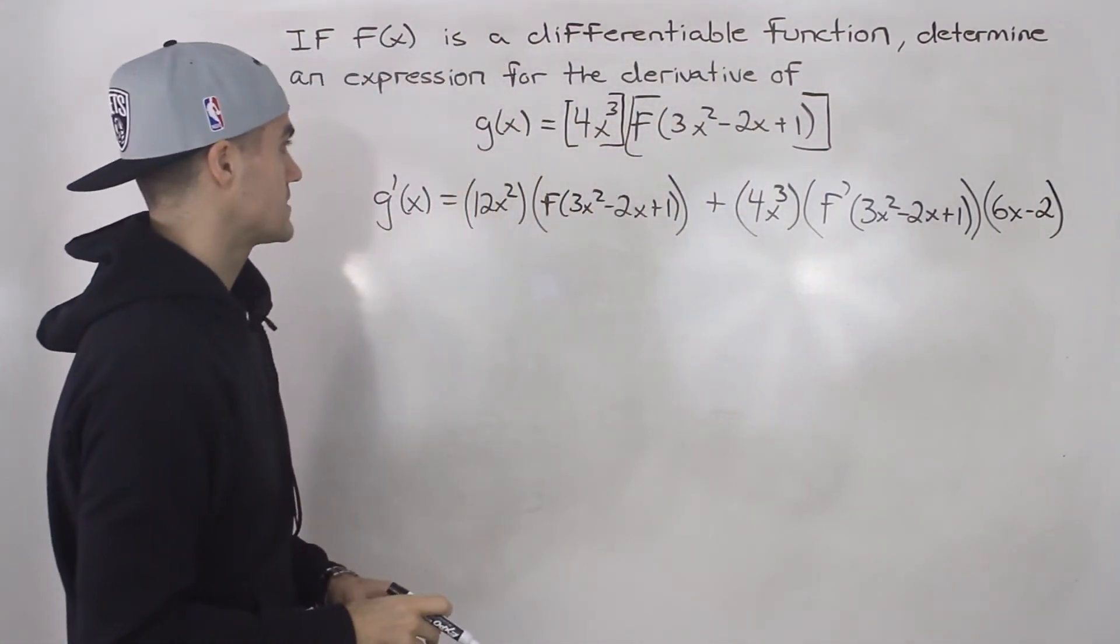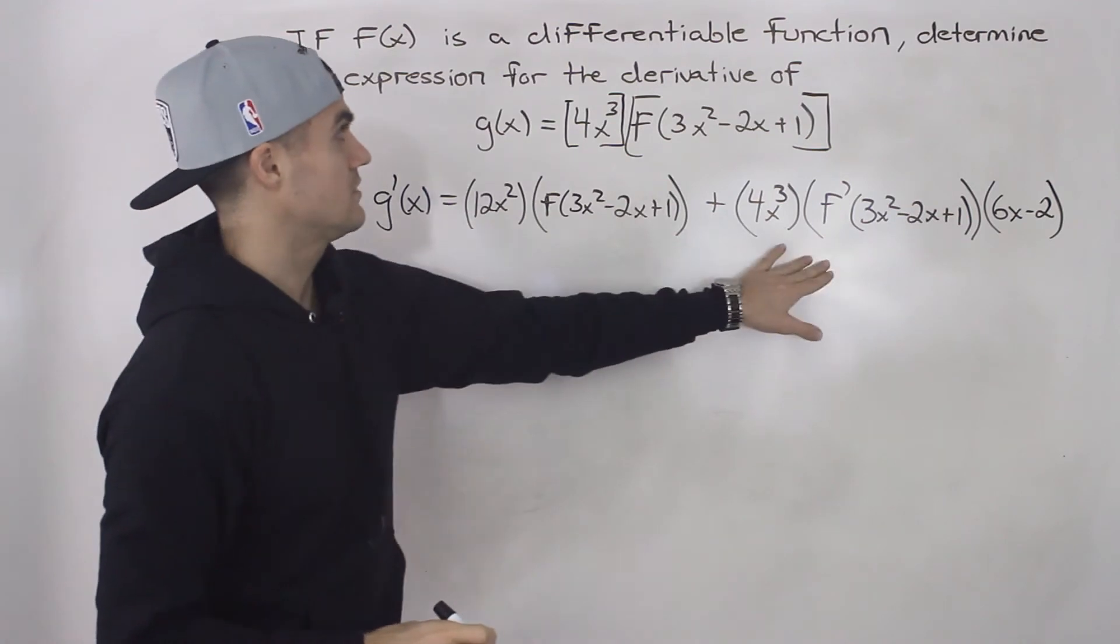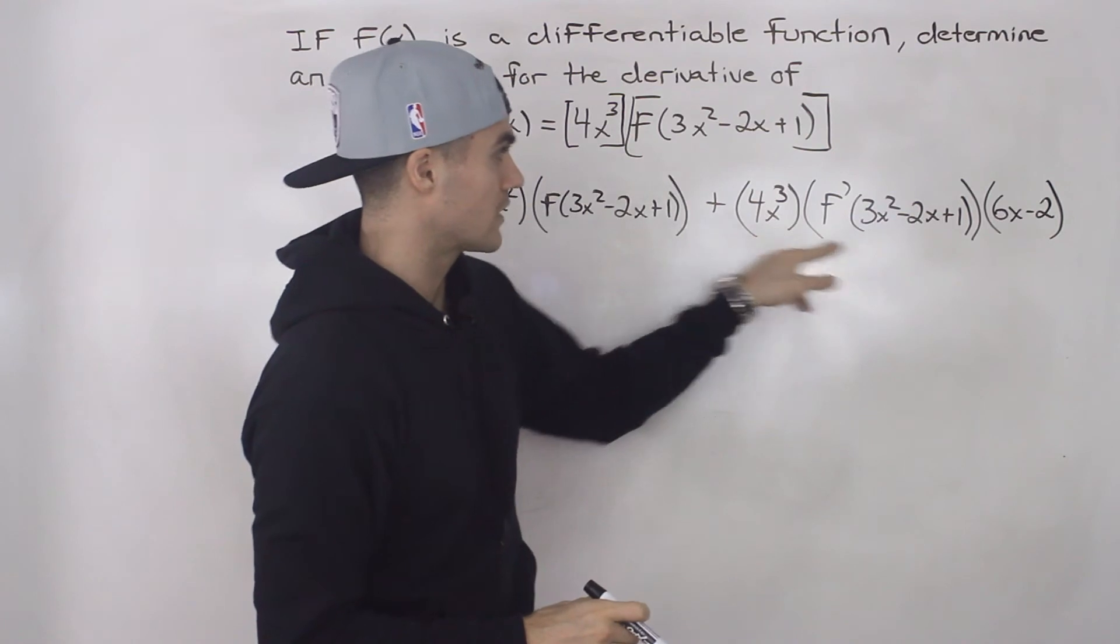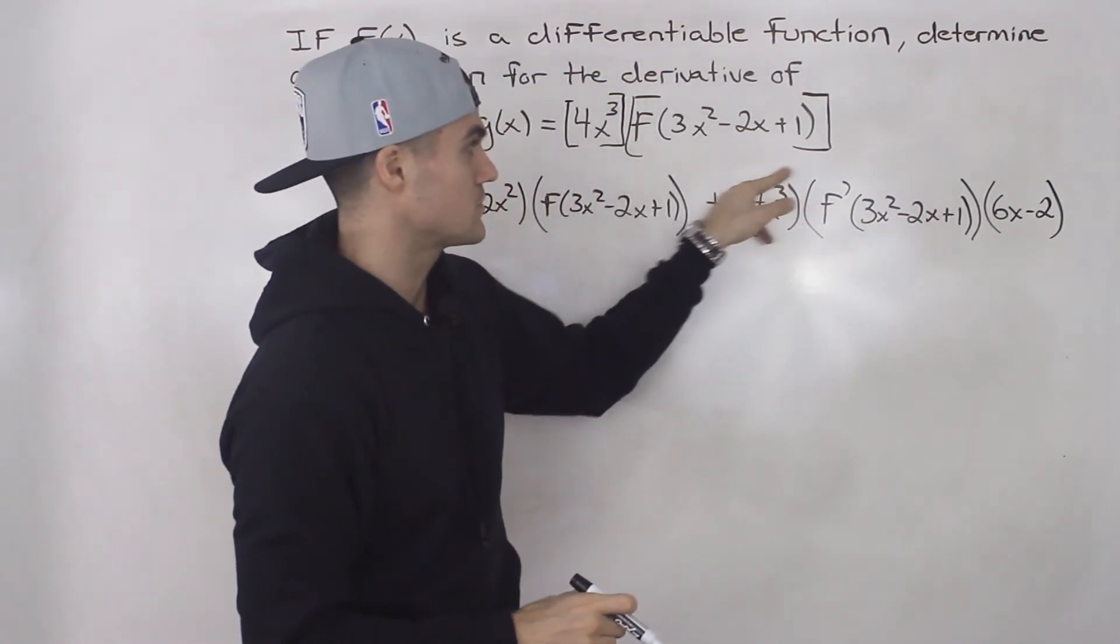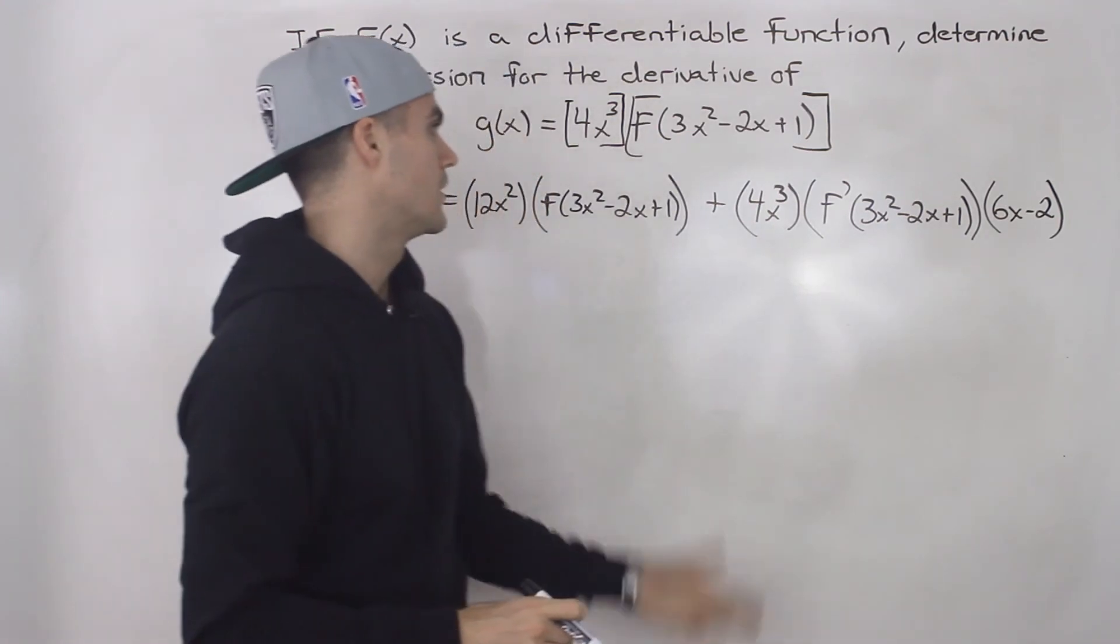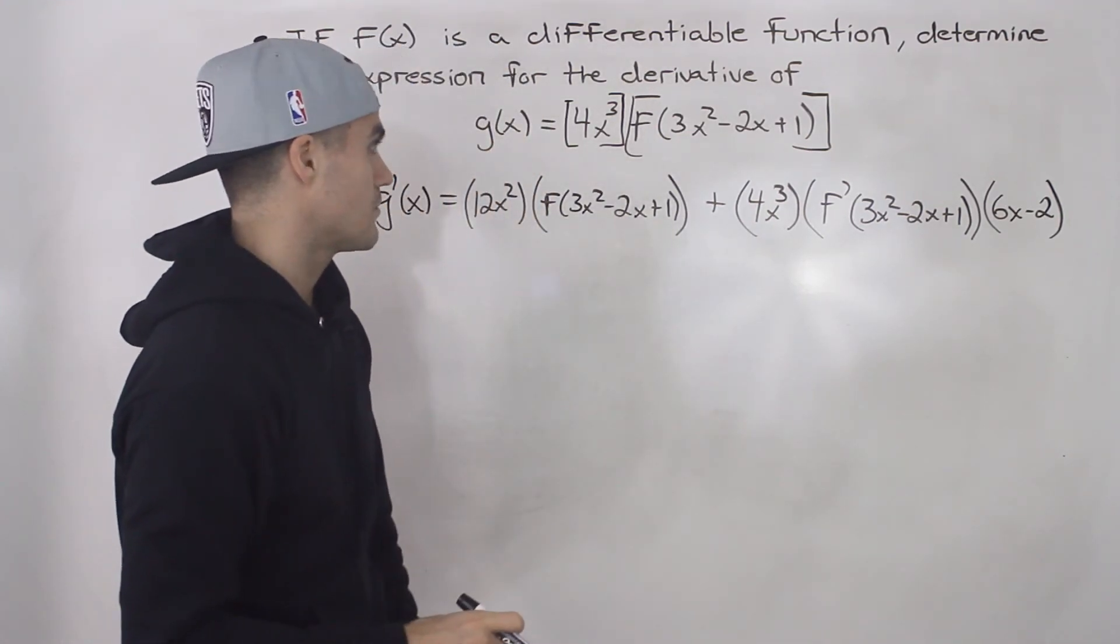And that is it. That is the expression for the derivative of g(x). You could also simplify this 4x³ with this 6x minus 2, so you would distribute that 4x³ inside that bracket. But either way, you can just keep them separate.